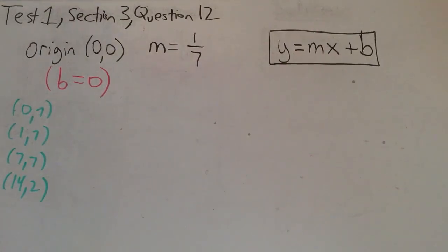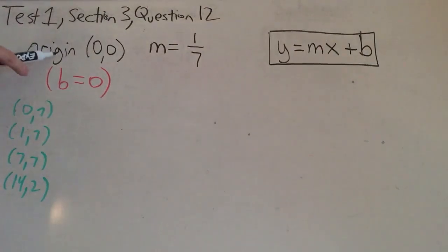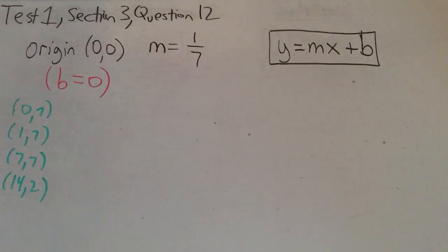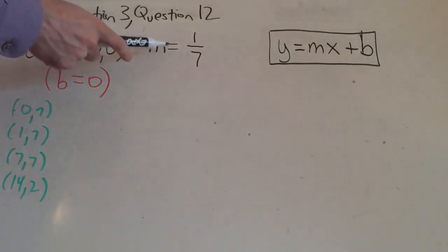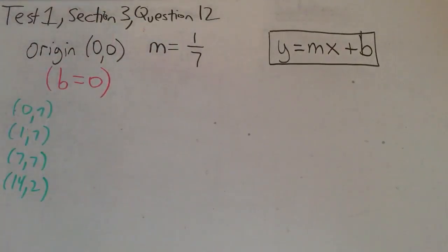Okay, so we're given that a line in the XY plane passes through the origin, which is the point (0,0), and has a slope of 1/7. They're asking which of the following points lies on the line. I have those points in green over here.